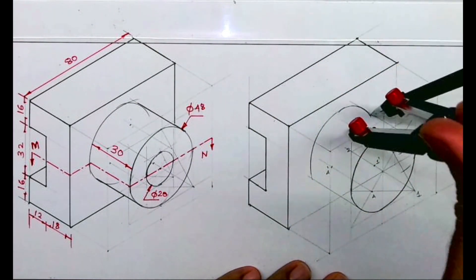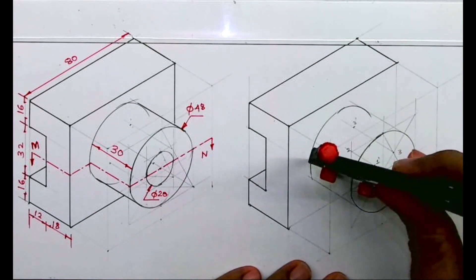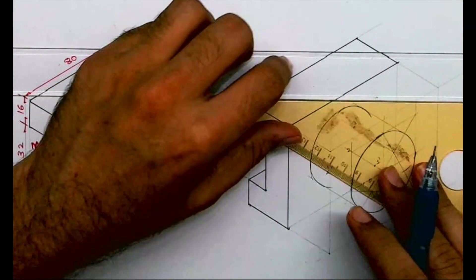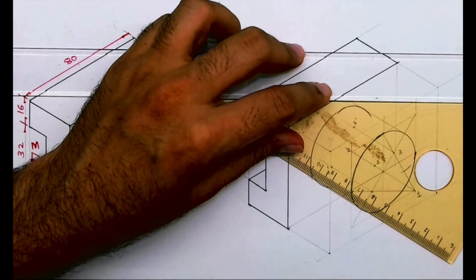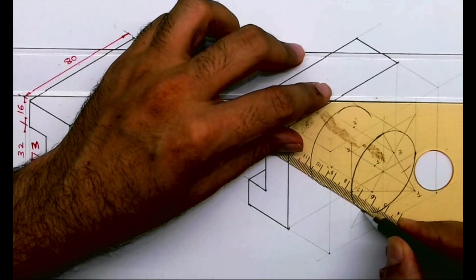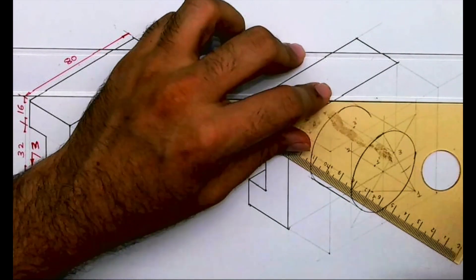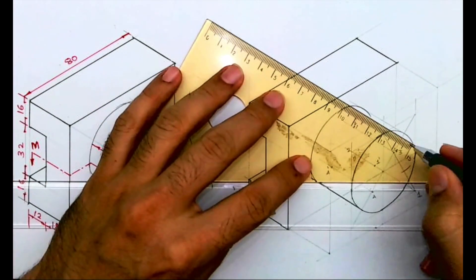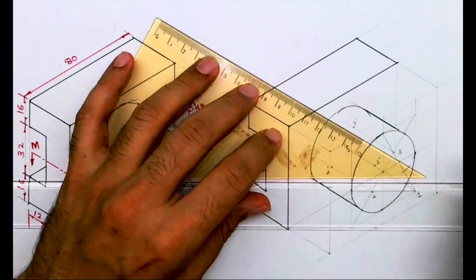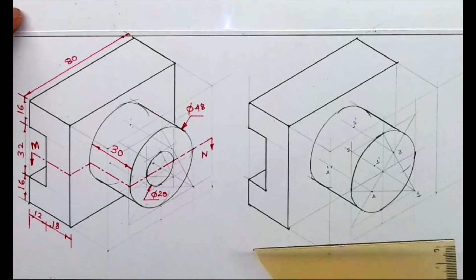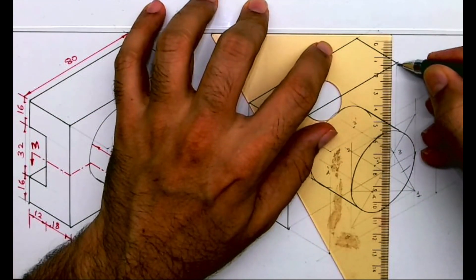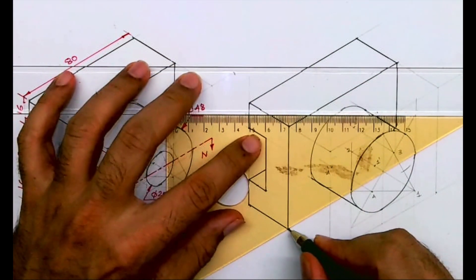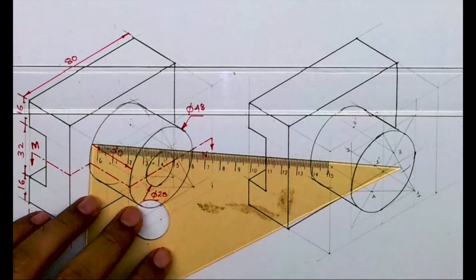So this way we will complete the circle part. Then we are left with only the inside diameter 20. From here you draw a vertical line. From here you draw a line. From here you draw a line.